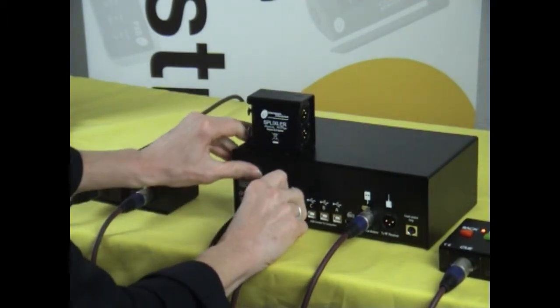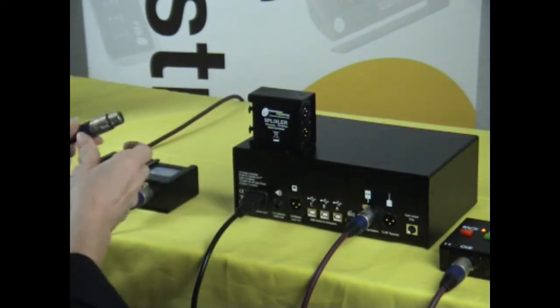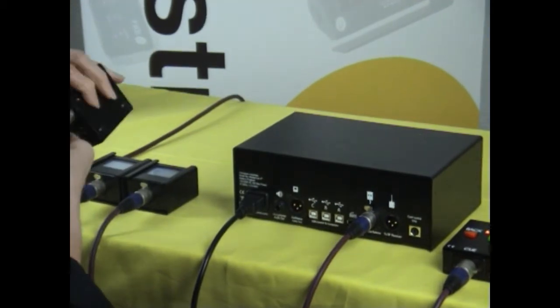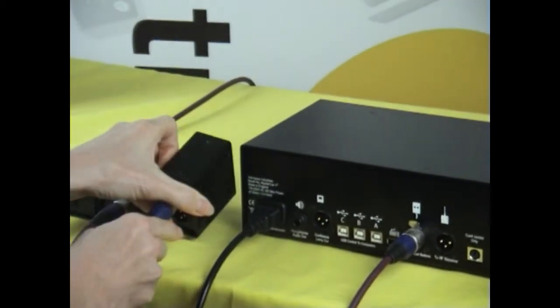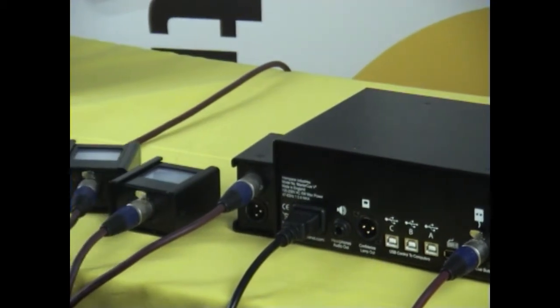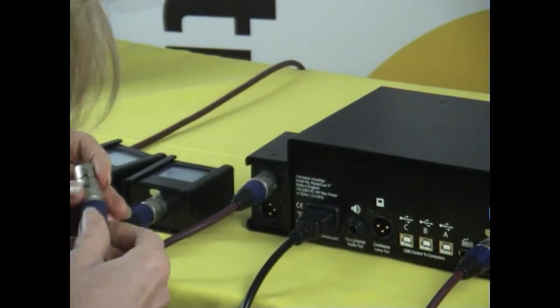I'm unplugging the XLR cable from the confidence lamp output and I'm plugging it into the Splixler. I'm taking a second confidence lamp here with its own cable. I'm attaching this also to the V6 and to the Splixler.